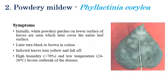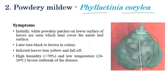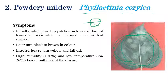Second one is powdery mildew, which is caused by Phylactinia coralea. On the right side we can see that initially powdery patches or powdery growth appears on the lower surface of the leaf. In severe cases, in later stages powdery patches appear on the entire leaf and upper surface also. Initially they appear on the lower surface, later covering the upper surface also. After covering both surfaces, the color slowly turns from brown to black discoloration.